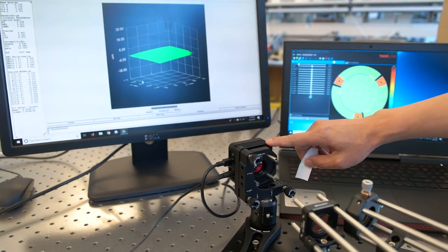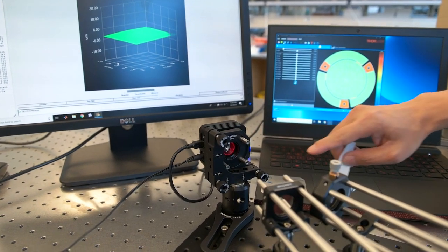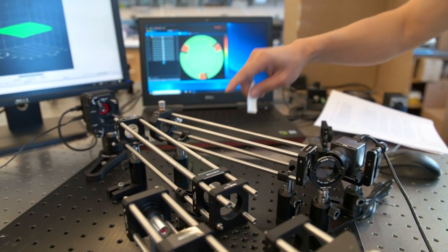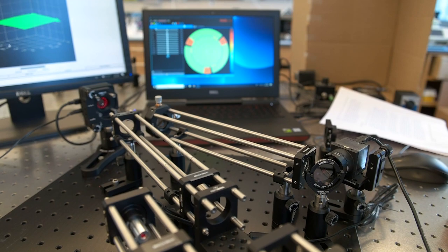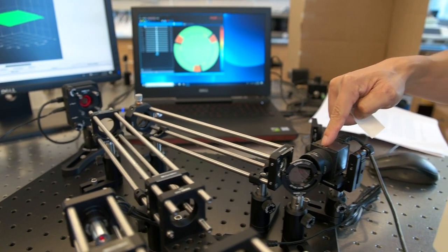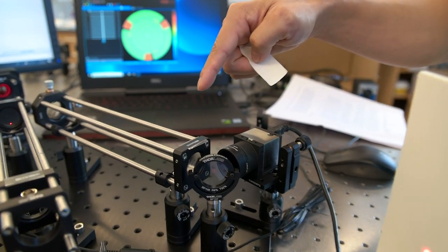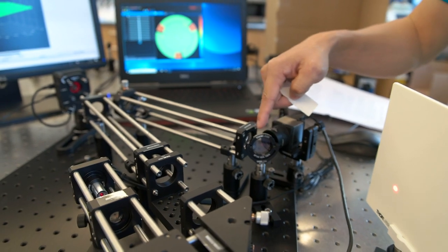The deformable mirror reflects the laser beam to another pair of lenses here. These two lenses fit the laser beam size to the aperture size of the wavefront sensor. Then the laser is divided into two arms by this beam splitter.